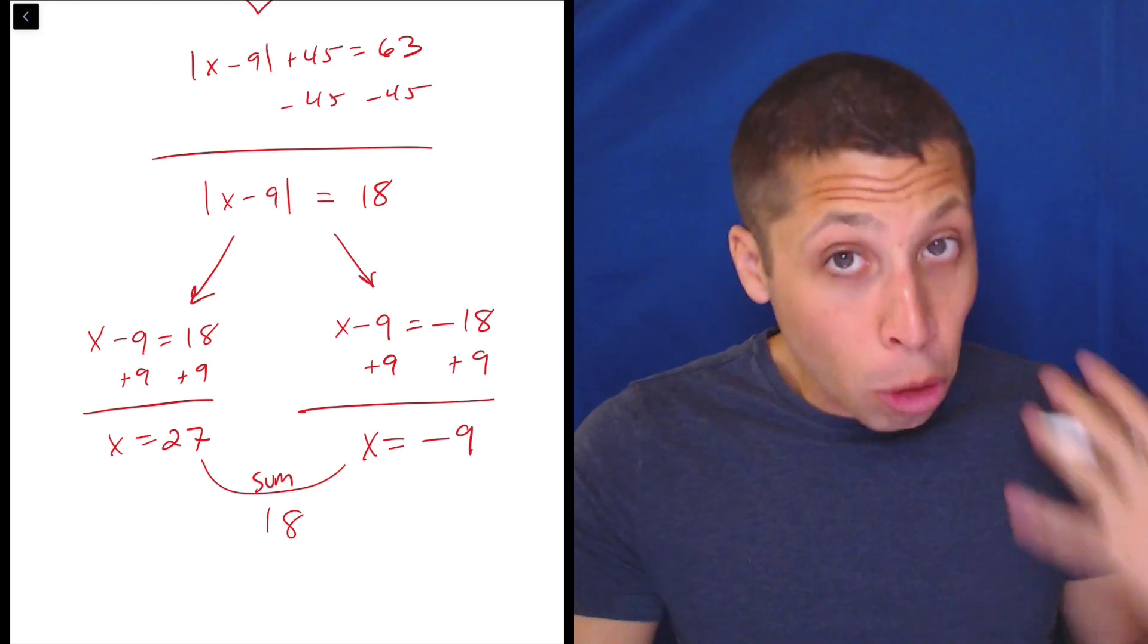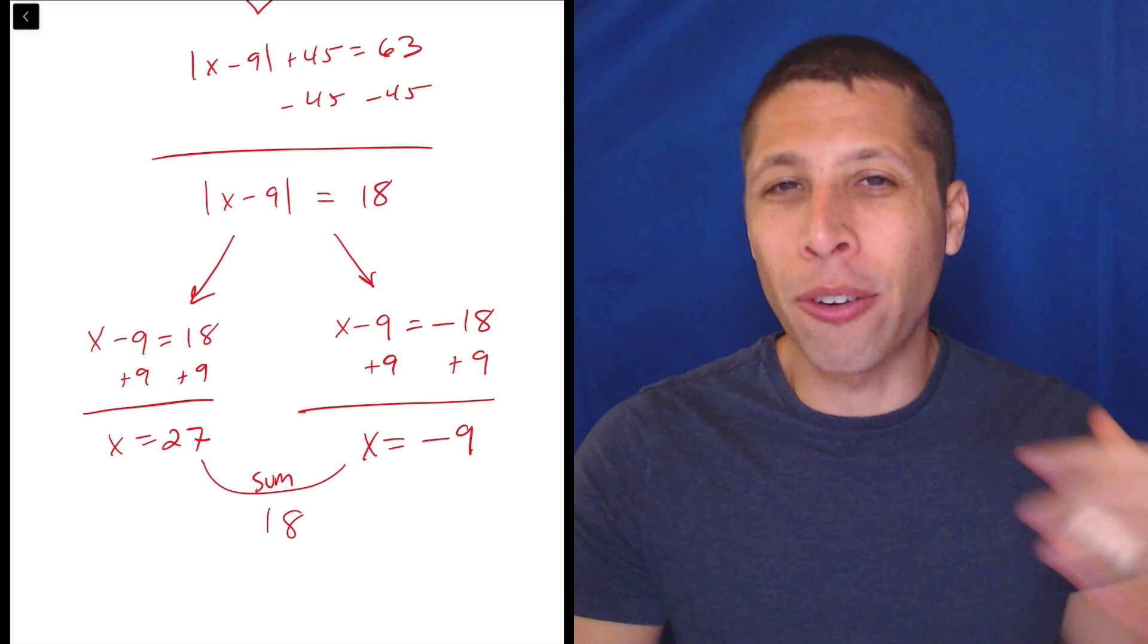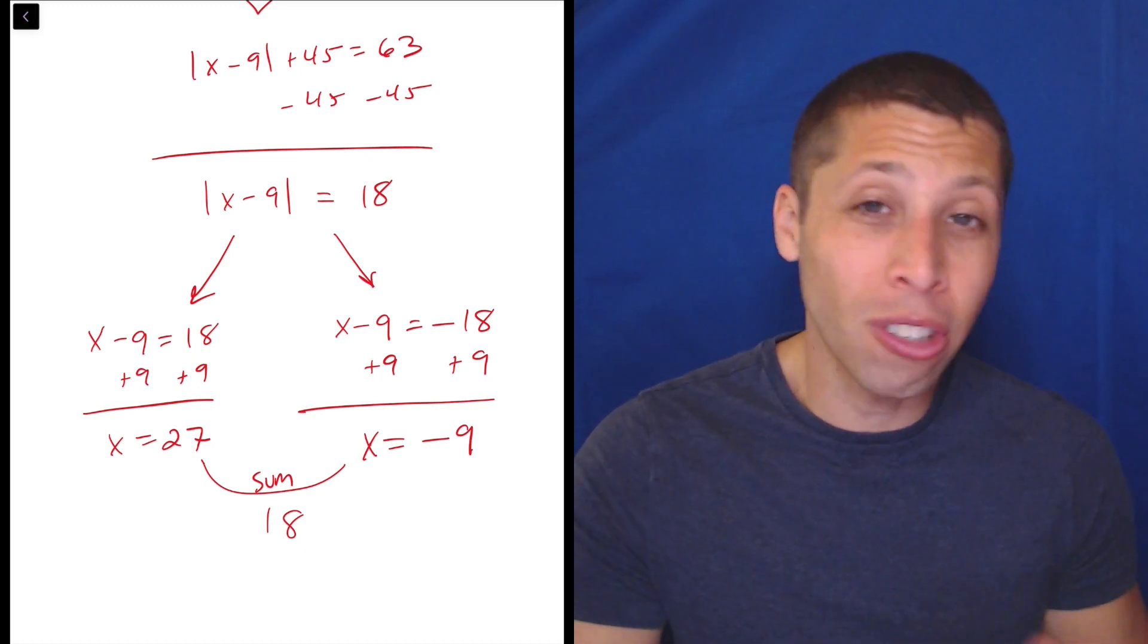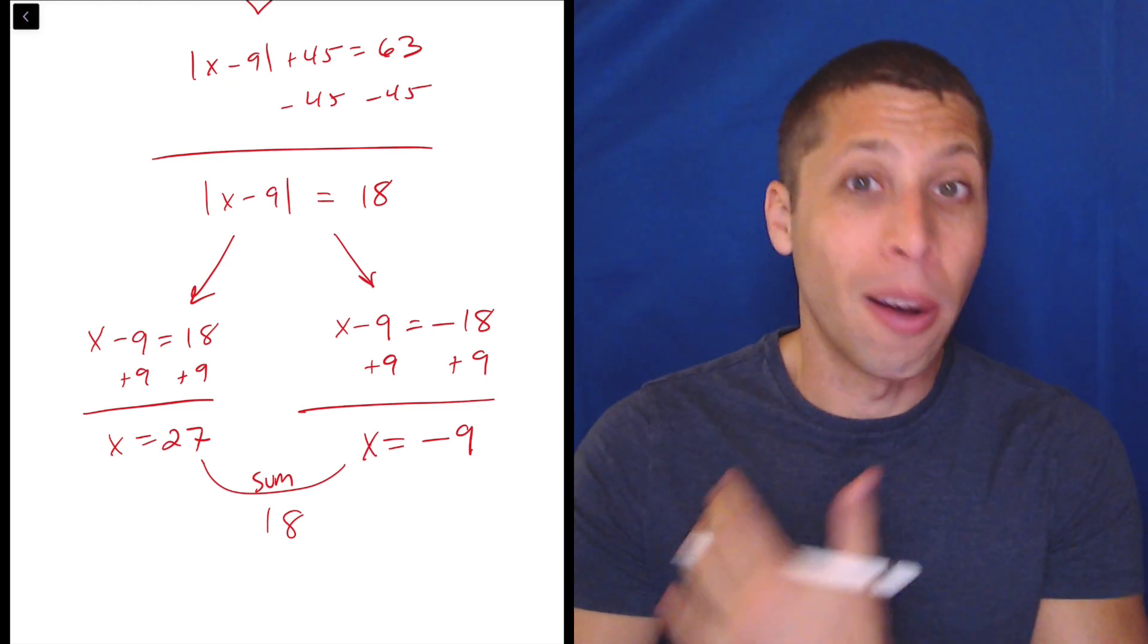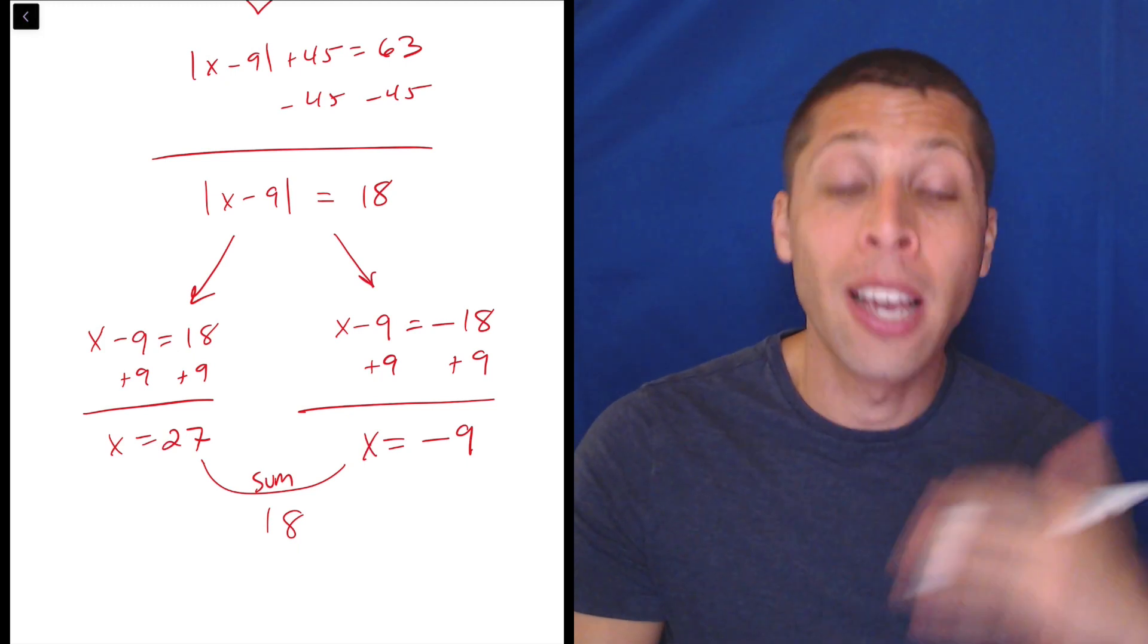So not super time-consuming, but you can see there's places we can go wrong. There's negatives flying around. Absolute value has this property where we do need to kind of make two equations. And so there's just lots of things that could go wrong. Not really, though, on the calculator. As long as you enter it in the calculator correctly, you're going to get the question right.